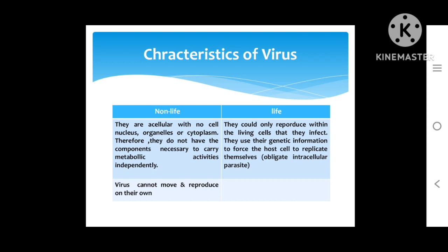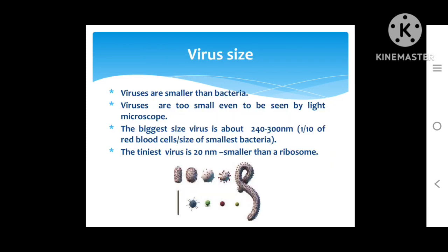In terms of non-living characteristics, viruses are acellular — they have no cell nucleus, no organelles, and no cytoplasm, so they cannot carry out metabolic activities independently. They cannot move or reproduce on their own. However, in terms of living characteristics, they can reproduce within living cells they infect, using their genetic information to force the host cell to replicate them. This is why they are called obligate intracellular parasites.